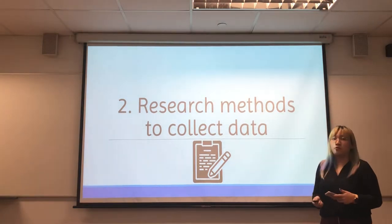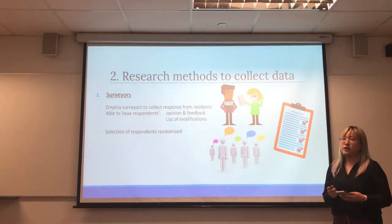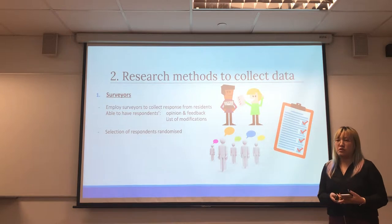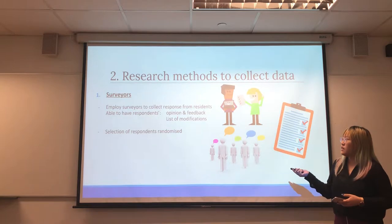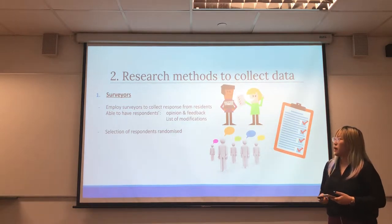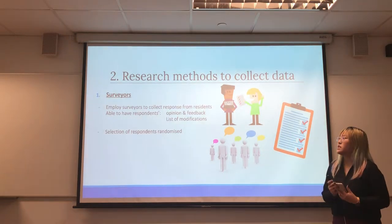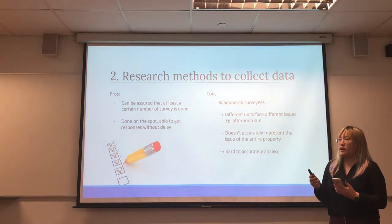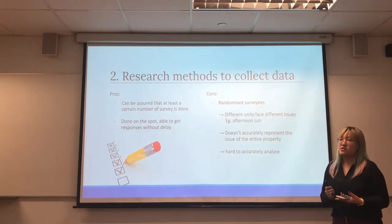Now we are talking about the different research methods to collect data. The first method would be hiring surveyors to go around the estate and ask residents to fill in surveys or questionnaires about possible defects within common areas, defects within their units, or any modifications done to their units. From the surveys collected, they are able to get opinions and feedback, and the selection of respondents within the estate will be randomised. An advantage of this is that there can be an assured number of results collected because the surveys are done on the spot.